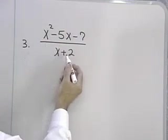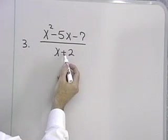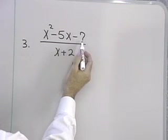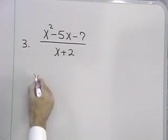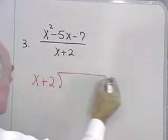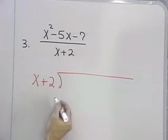I can't use the method I used in the previous example because x plus 2 is not a factor of x squared minus 5x minus 7. So instead, I'm going to use a form of long division similar to long division with whole numbers.